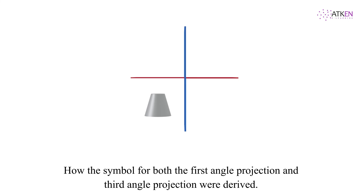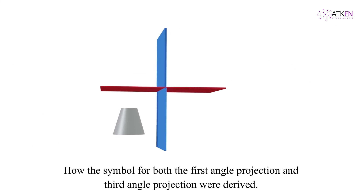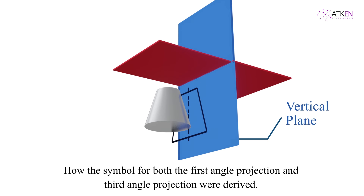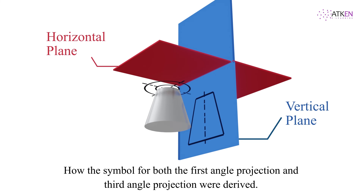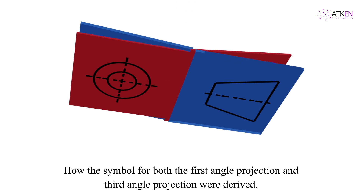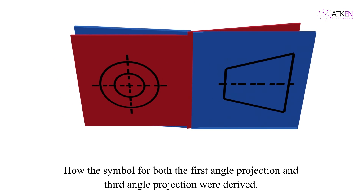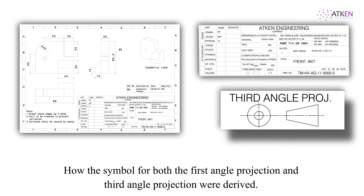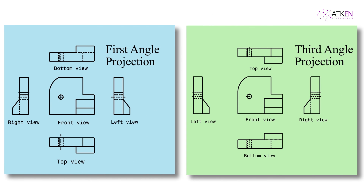For third angle projection, the object is in the third quadrant. The front view is projected onto the vertical plane and the top view is projected onto the horizontal plane. If the projections in the third quadrant are unfolded and rotated, it forms the symbol for third angle projection. These symbols should be placed in the space provided in the title block of the drawing sheet.